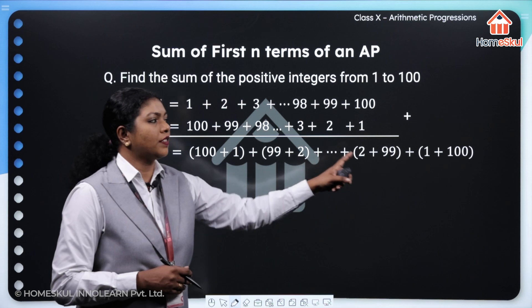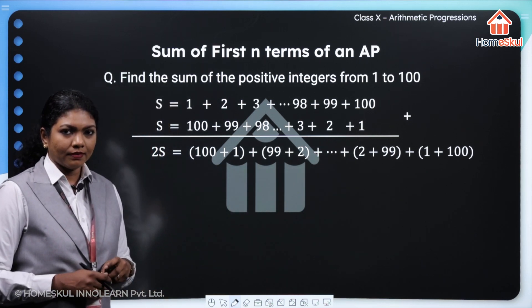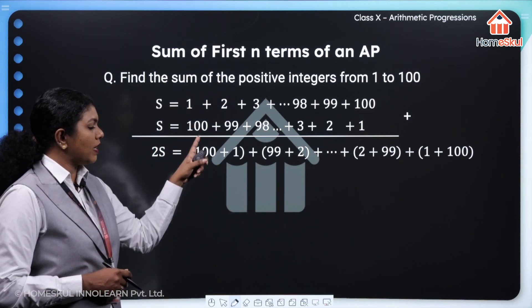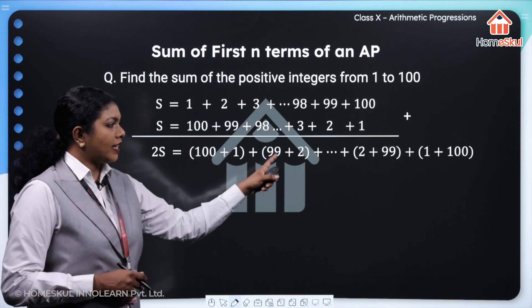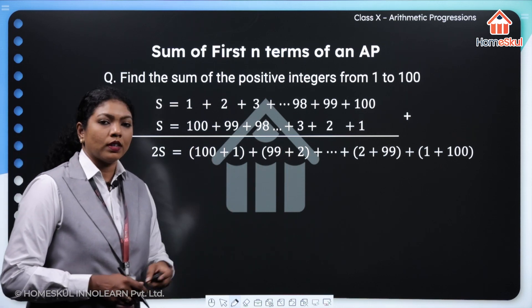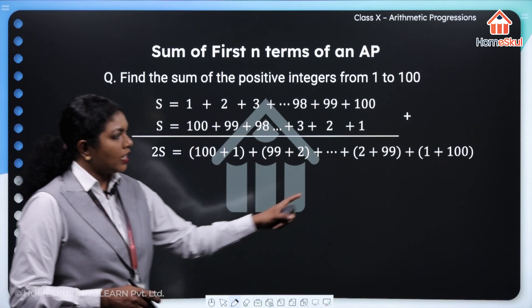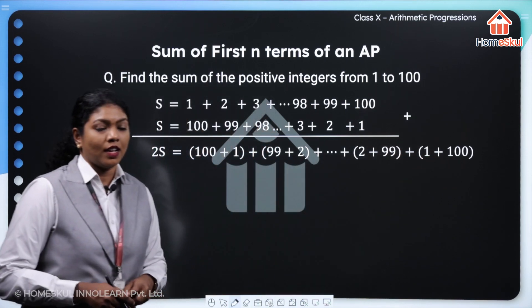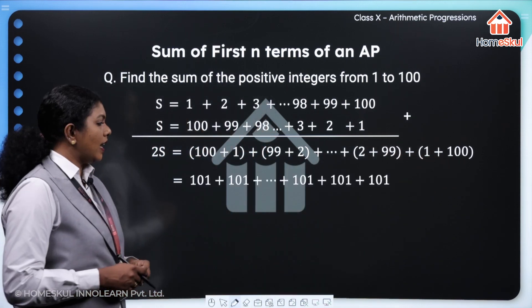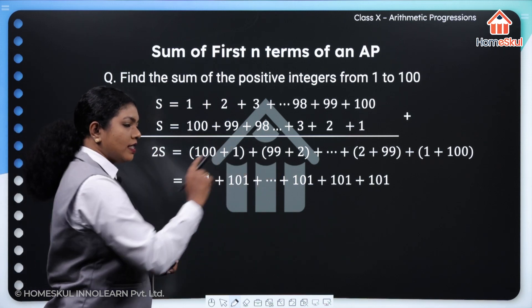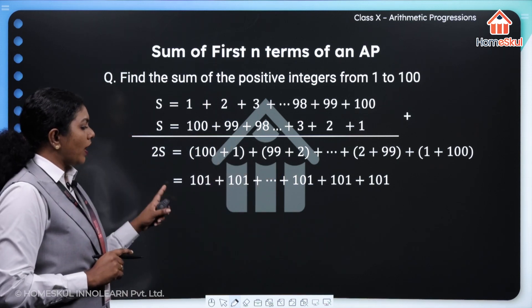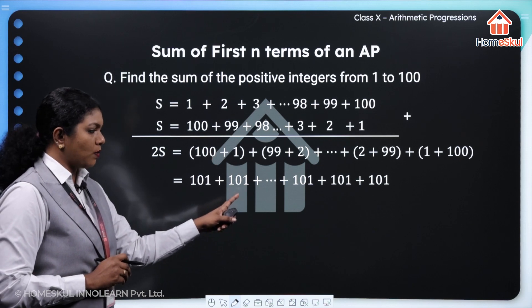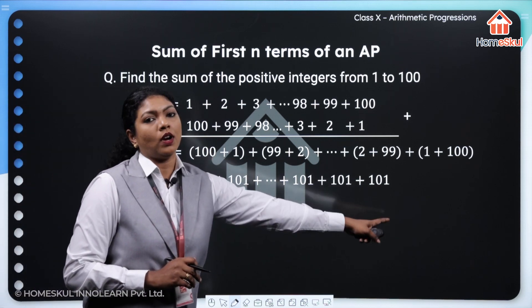What is the speciality of these pairs? Look at them. If you add the first two numbers, 1 plus 100, it is 101. Then 99 plus 2, again 101. Even if you look at the last term, 1 plus 100, that is also 101. So if you add all these numbers, you are getting 2S equals 101 plus 101 plus 101, and so on.